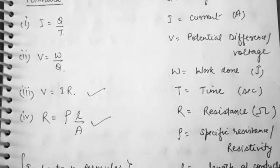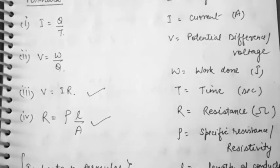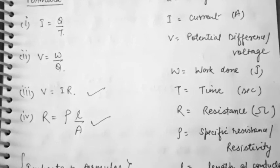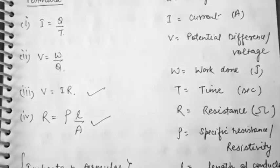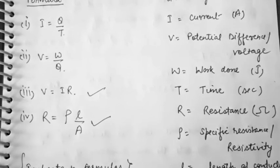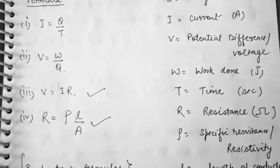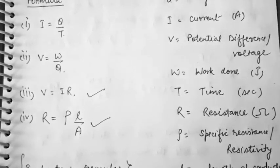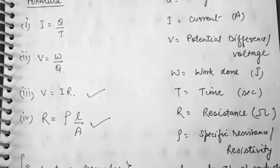The second formula is V = W/Q, where W is work done, V is potential difference or voltage and Q is charge. The definition is: work done to move a charge from one point to another.